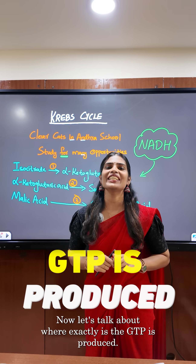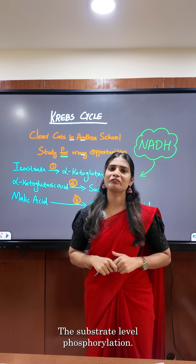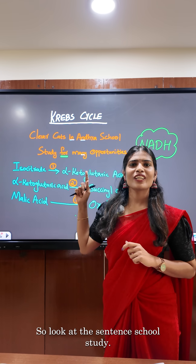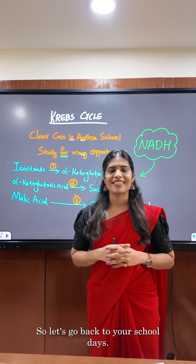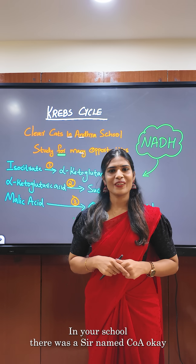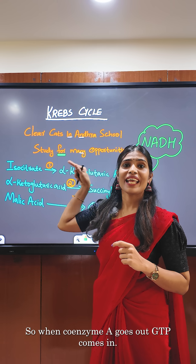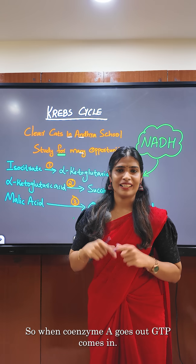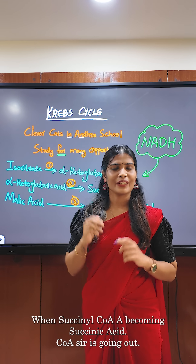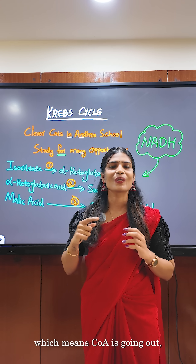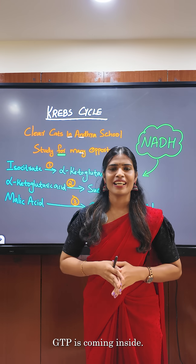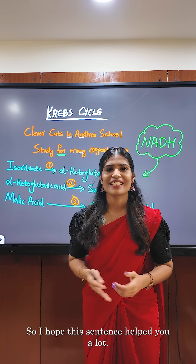Now let's talk about where exactly GTP is produced — the substrate level phosphorylation. Look at the words 'school study.' Let's go back to your school days. In your school there was a sir named Koya. So when coenzyme A goes out, GTP comes in. In which step? When succinyl coenzyme A becomes succinic acid — Coe-sir (coenzyme A) is going out and GTP is coming inside. So I hope this sentence helped you a lot.